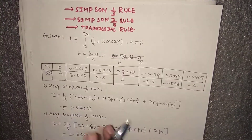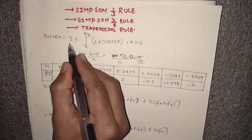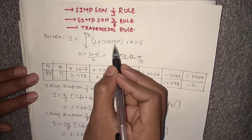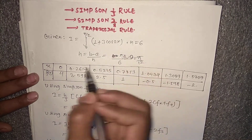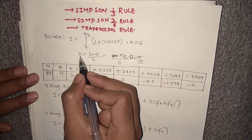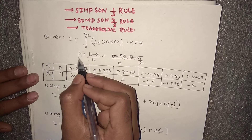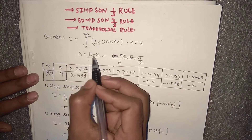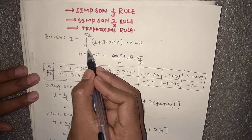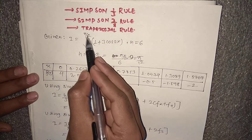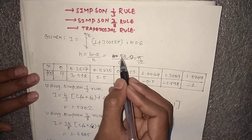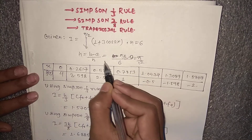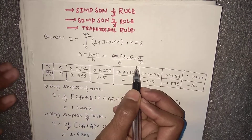Now we will solve our problem. We are given I = integral from 0 to π/2 of (1 + 3cos(2x)), with n equals 6. The spacing h is calculated as h = (b − a)/n, where a = 0 and b = π/2. So h = (π/2 − 0)/6 = π/12. The spacing is π/12.